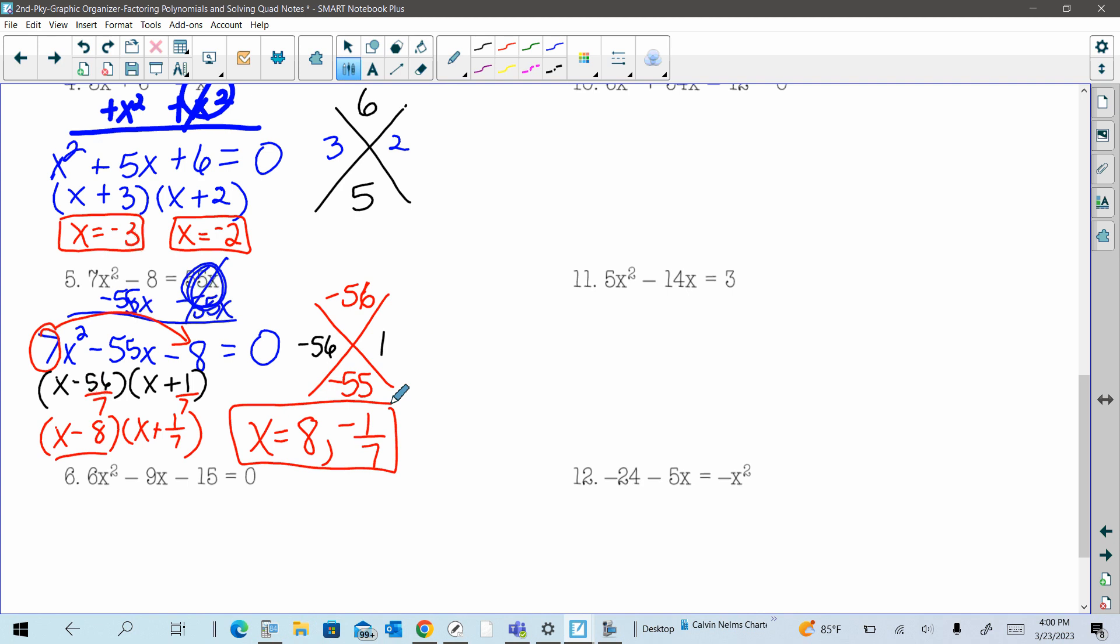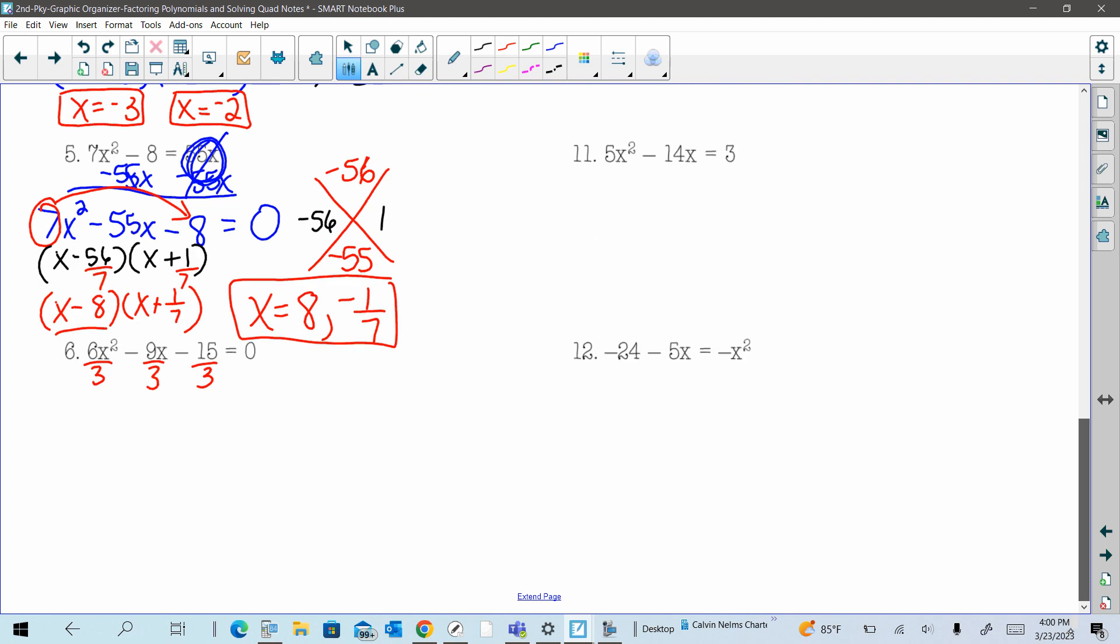So for a problem like six here, it's already equal to zero. But what I would do first, the first thing you should always do is check for a GCF. There's a GCF of three for each term. So now, what I'm going to do is I'm going to put that three outside the parentheses. I have left remainder 2x squared minus 3x minus five equals zero. And I have a coefficient. So this tells me slide and multiply. So I have factors of a negative 10 with the sum of a negative three. Well, that's a negative five and positive two.